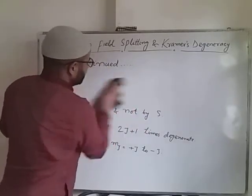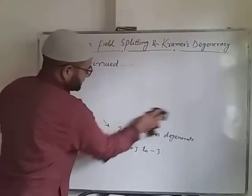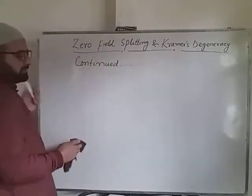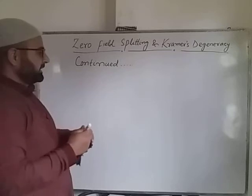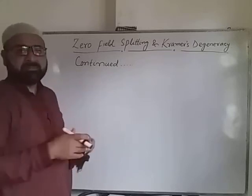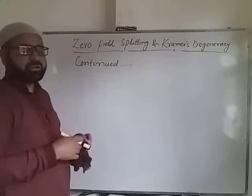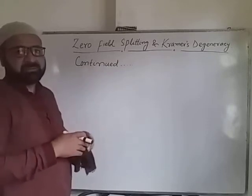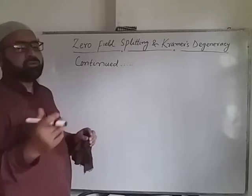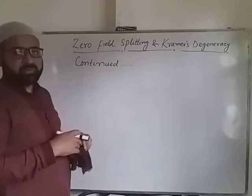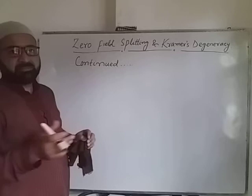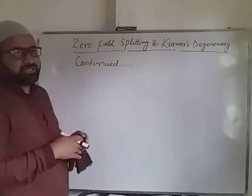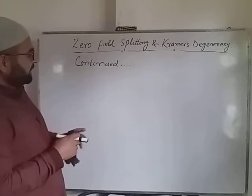That is why, because of this spin-orbit coupling, transition metal complexes have complicated spectra in EPR. This can be further complicated by hyperfine splitting, which occurs when the electron spin system interacts with the nuclear system of that metal ion on which the unpaired electron is present. Hyperfine splitting further complicates this situation.